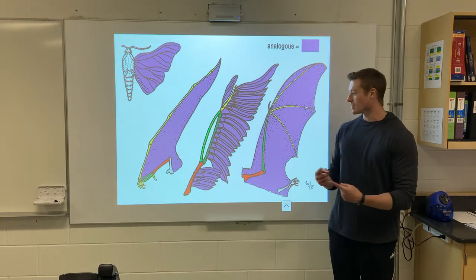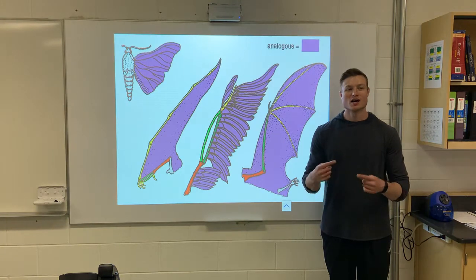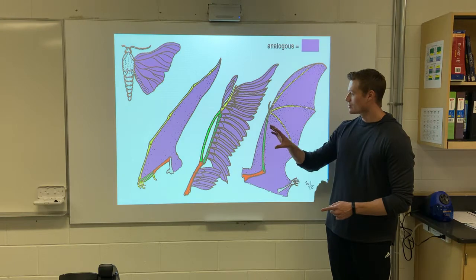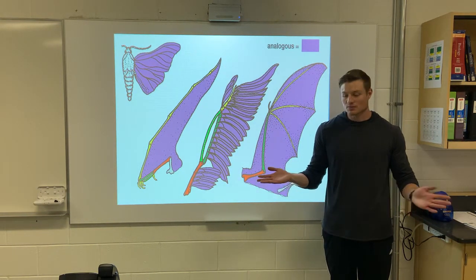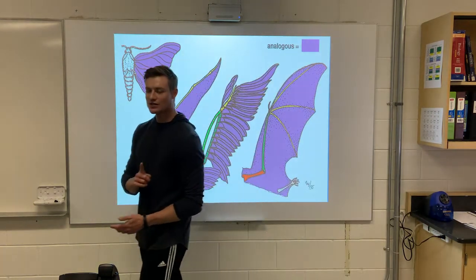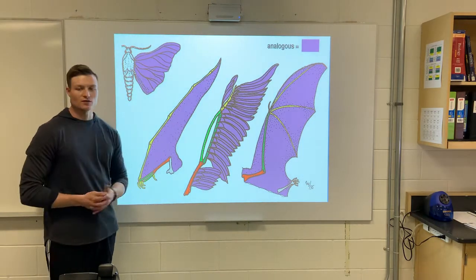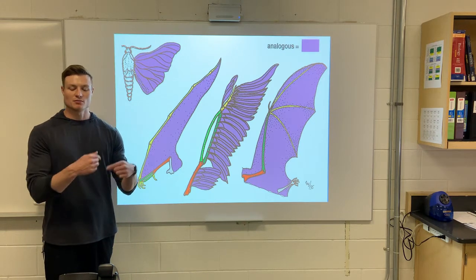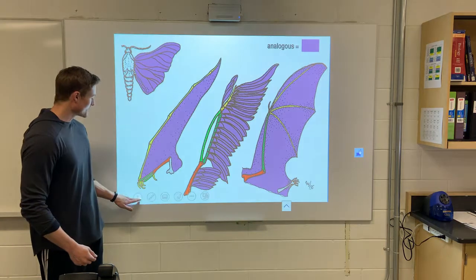An analogous feature would be similar function but different structure. For example, bat wings, insect wings, and bird wings are all for flying — similar function — but they have a different structure. To recap: analogous features have the same function but different structure; homologous features have similar structure but a different function.